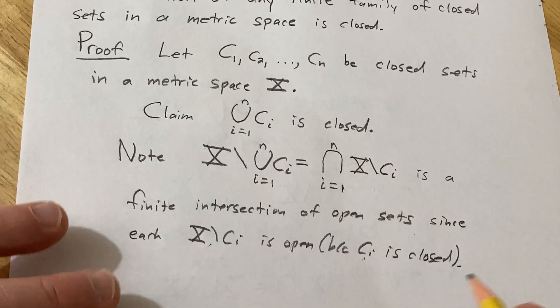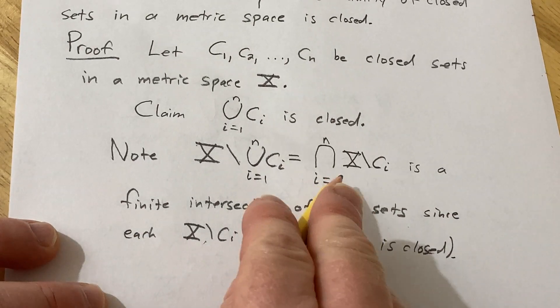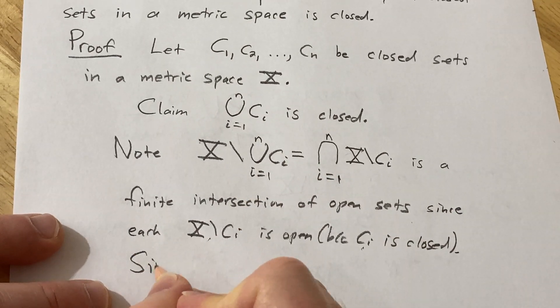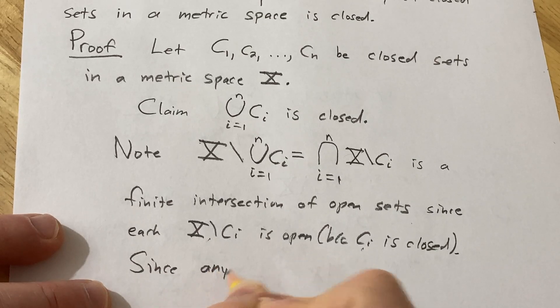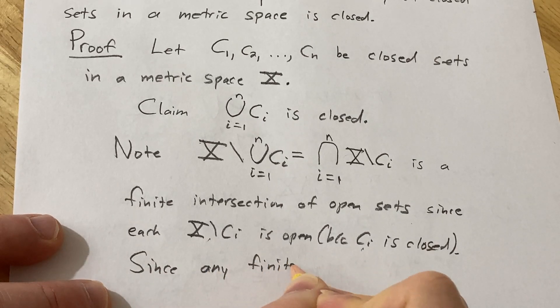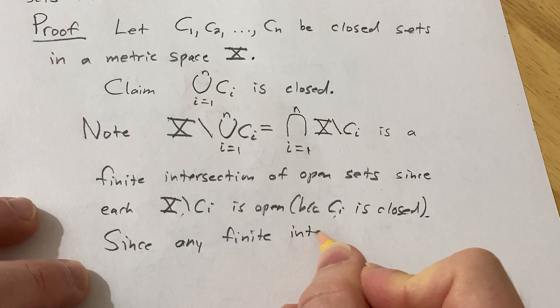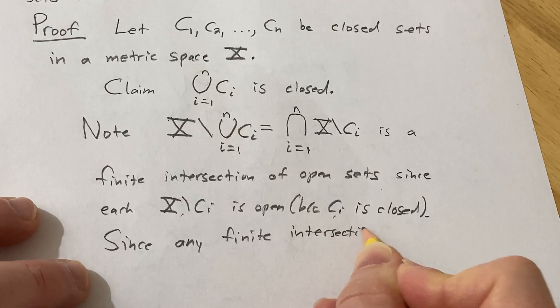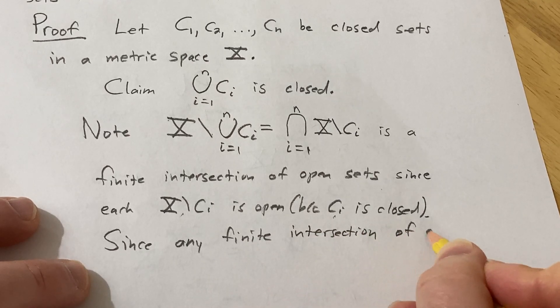So since any finite intersection of open sets is open, this one is also open. So let me just say that since any finite intersection of open sets...